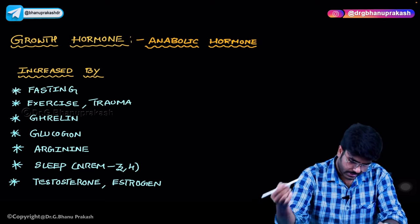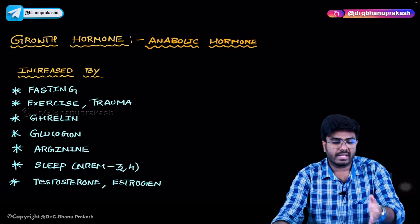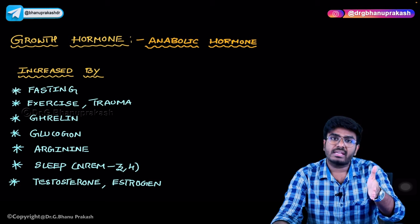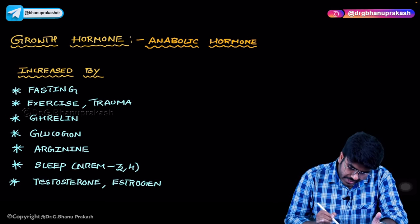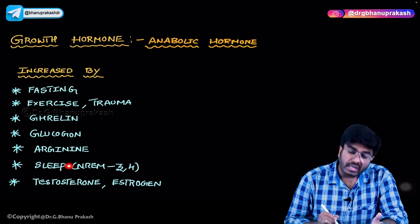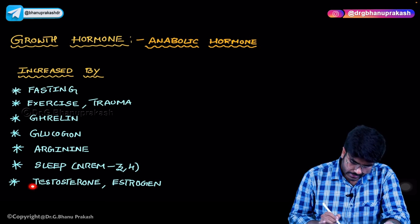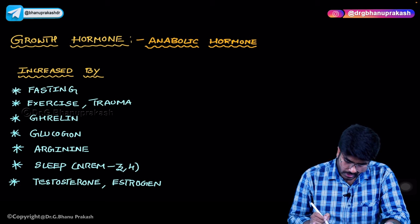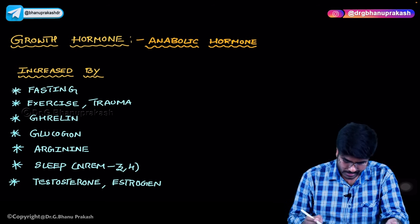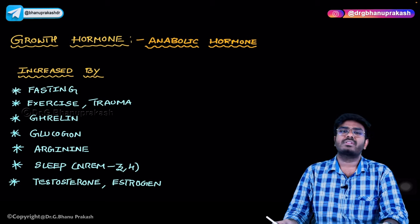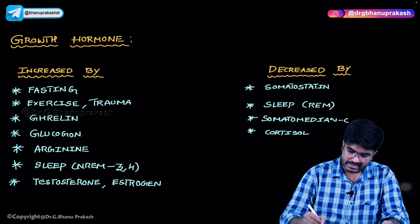Amino acids like arginine also increase growth hormone. During sleep, there are different phases — NREM and REM. NREM has stages one through four; stages three and four are deep sleep. During NREM stages three and four, growth hormone is released and helps in the growth of the body. Steroids like testosterone and estrogen are also associated with increased growth hormone levels.